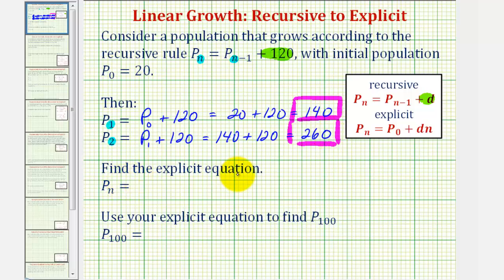Now we're asked to find the explicit equation from the recursive equation. We have both the recursive and explicit equations for linear growth given here, where d is the common difference, and P₀ is the initial value which we know is 20.